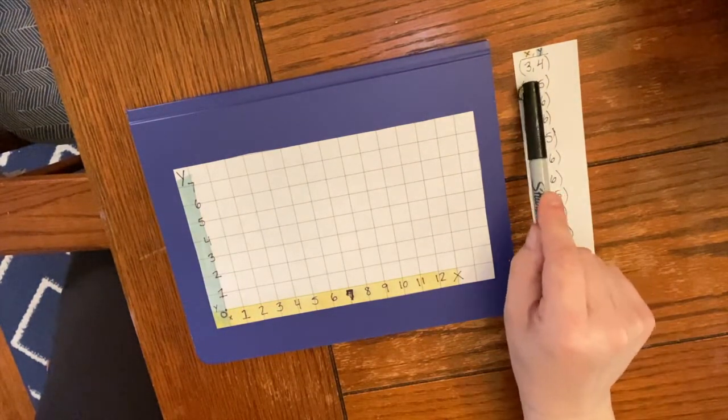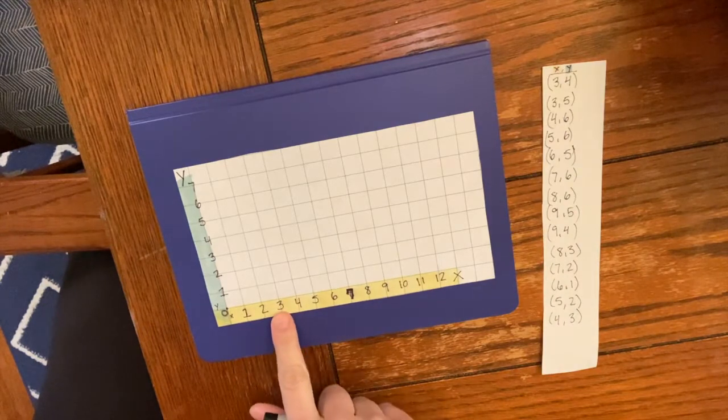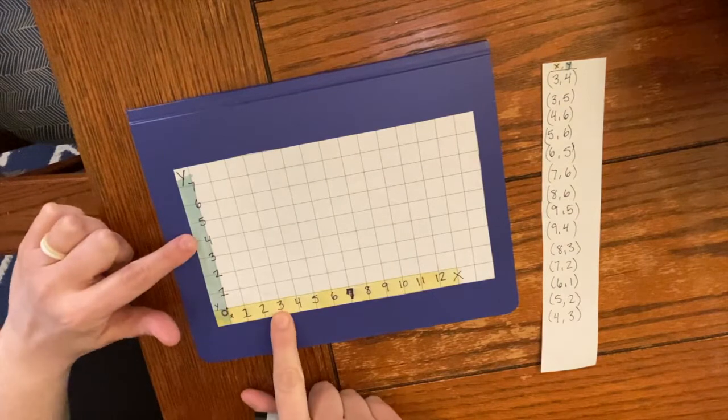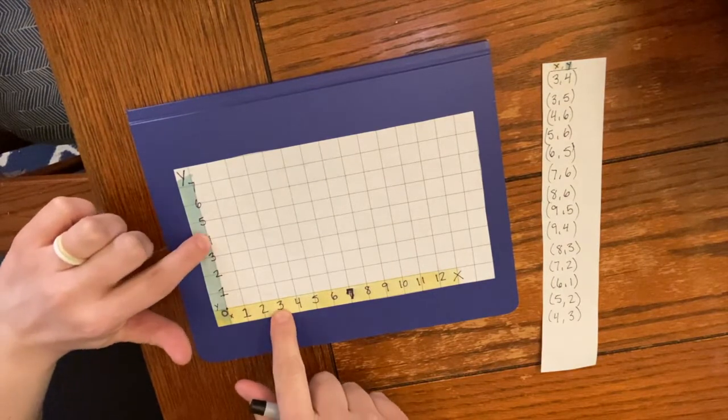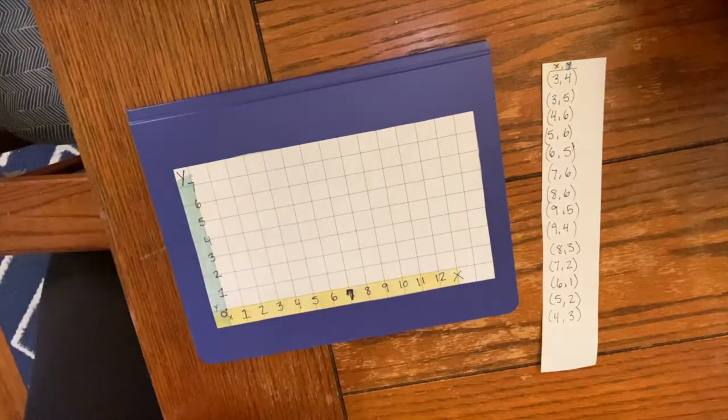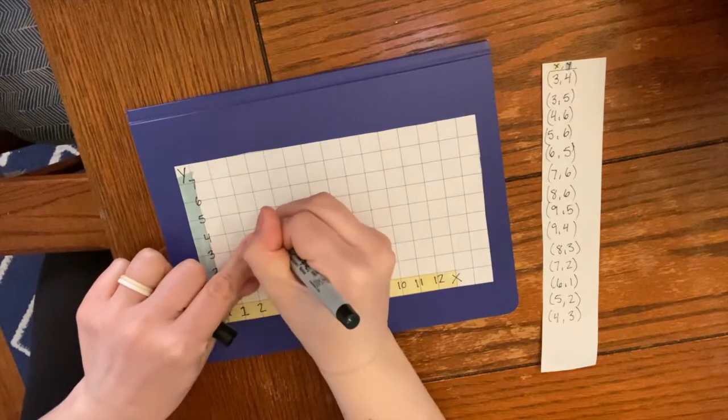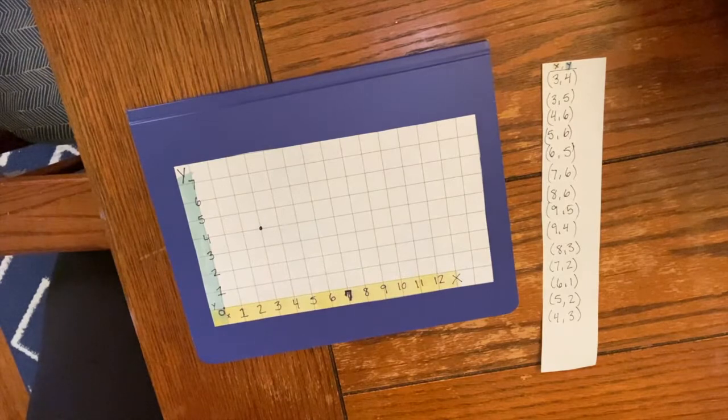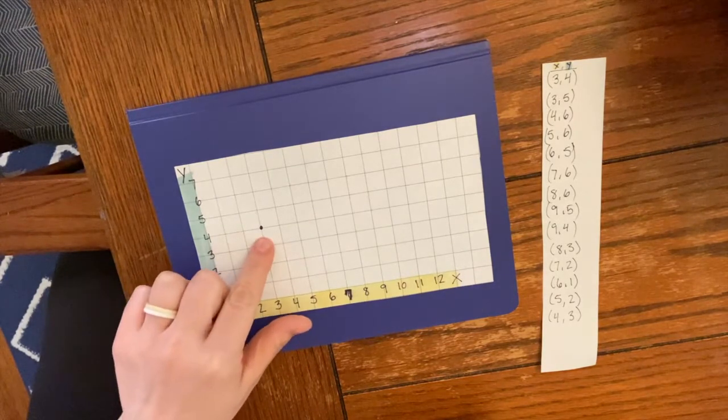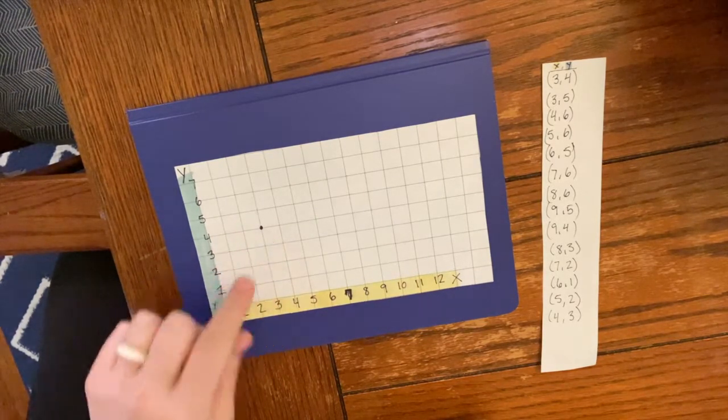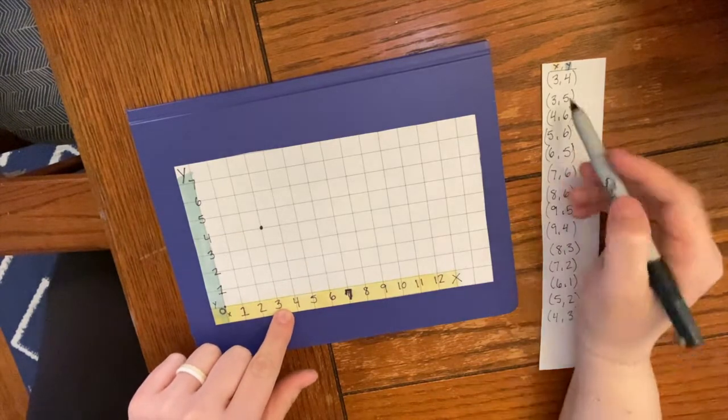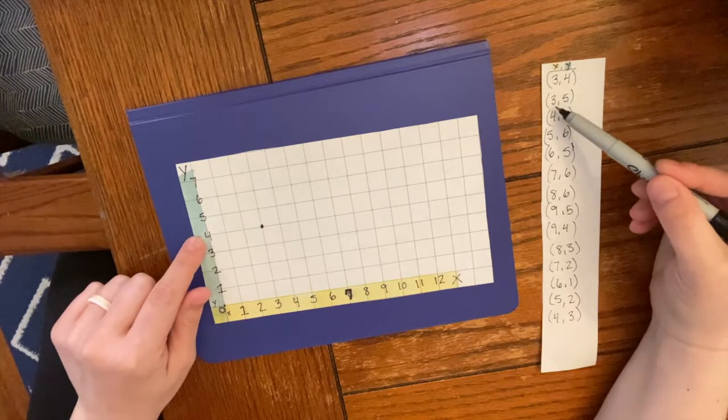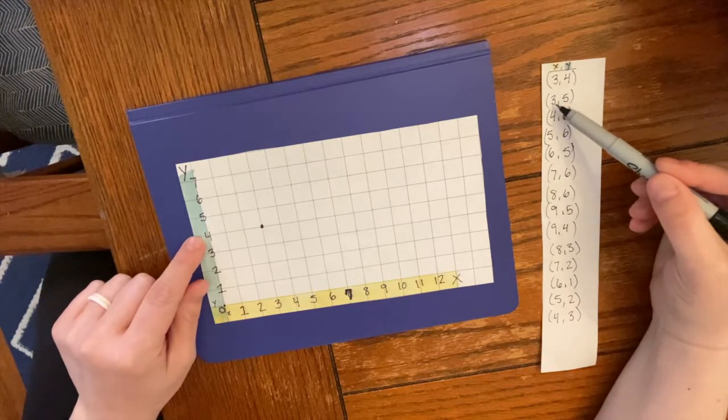Here it says 3, so 3 on the x-axis, and then it says 4 on the y-axis. We're gonna find that, we're gonna bring our fingers to where they meet. That's right here. So this says 3, 4 - 3 on the x-axis, 4 on the y-axis.